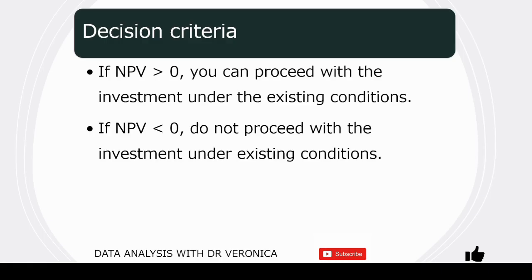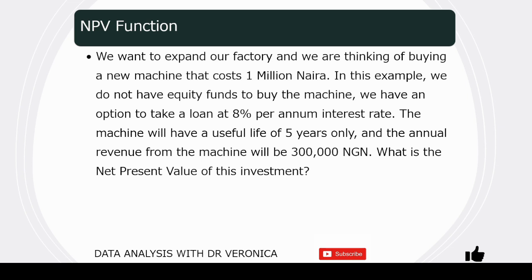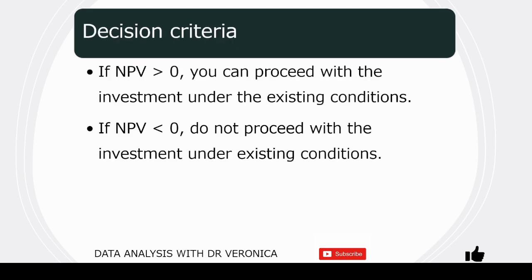Whenever you work with NPV, the results inform your decision making as follows. If the net present value is greater than zero, you can proceed with the investment under the existing conditions — as in our first example at 8%, where the NPV was positive. But if the NPV is less than zero, the decision is not to proceed, because the present value of the discounted cash flows is less than the cost of the investment. You can only proceed if some conditions change, such as the interest rate.